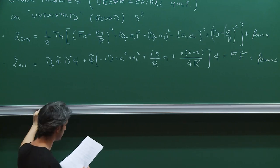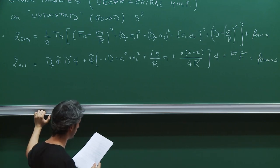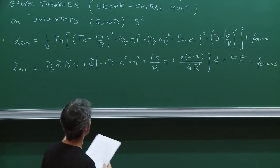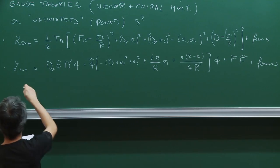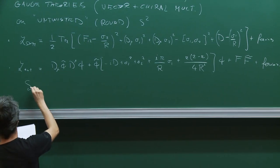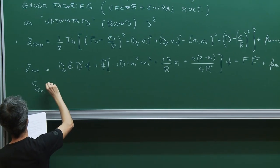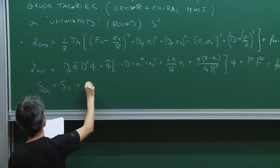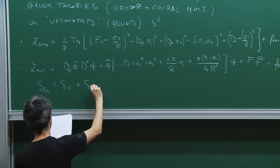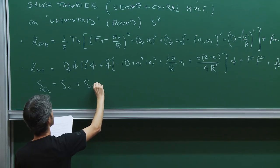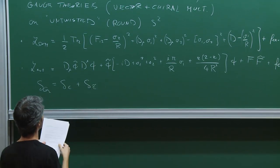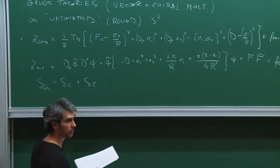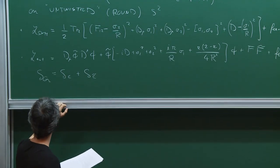We discussed these two terms in particular. We say these are Q-exact for a certain supercharge that we choose. We have 4 supercharges at our disposal, but we choose 1 out of 2 here and 1 out of 2 here.